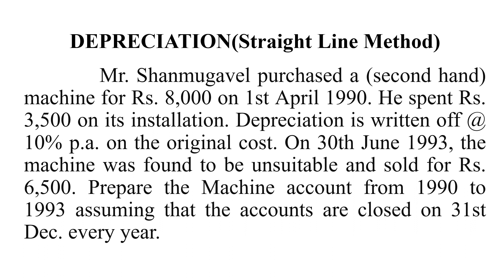On 30th June 1993, the machine was found to be unsuitable and sold for Rs. 6,500. So on 30th June 1993, the machine is sold for Rs. 6,500. For that, we need to prepare the machinery account for all 3 years, 1990 to 1993. This account will close every year on 31st December. The year-end value on 31st December is what we need; then we need to go to profit or loss.